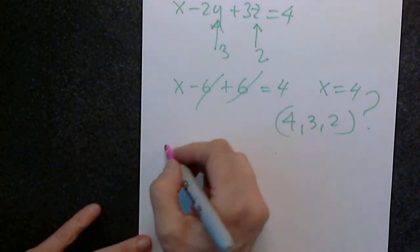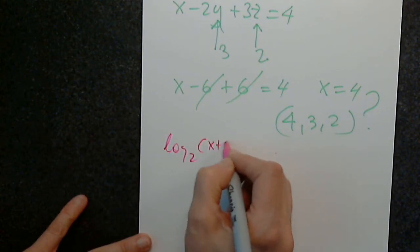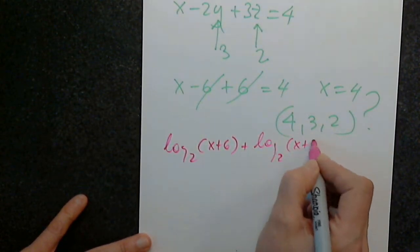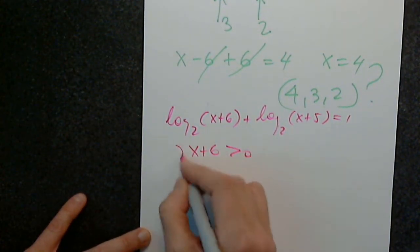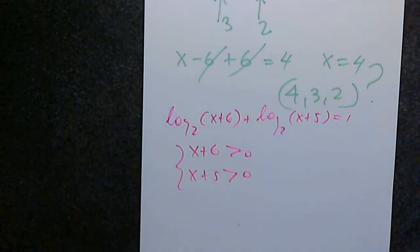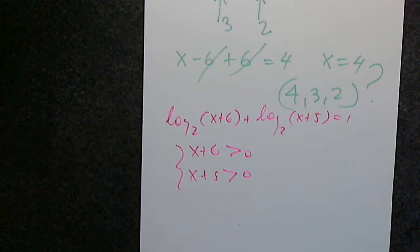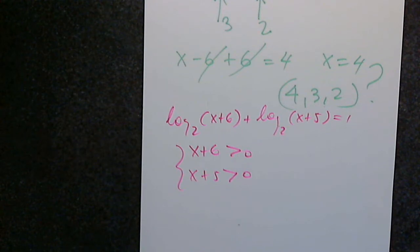Problem 12: solving the logarithmic equation. We have log base 2 of x plus 6, plus log base 2 of x plus 5, equals 1. For a log equation, you either go back and check after finding the solution, or you state the domain first — but you must use one or the other to get full credit. So: x plus 6 must be positive and x plus 5 must be positive, giving x greater than negative 6 and x greater than negative 5.